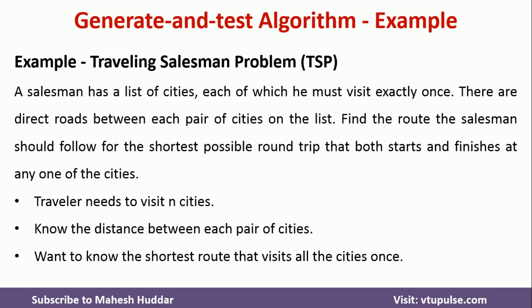Now, coming back to the example — in this case, I am going to consider a Traveling Salesman Problem to understand the generate and test algorithm. The TSP problem is something like this: a salesman has a list of cities, each of which he must visit exactly once. There are direct routes between each pair of cities. Find the route the salesman should follow for the shortest possible round trip that both starts and finishes at any one of the cities. The traveler needs to visit all n cities exactly once and we need to return the shortest route.